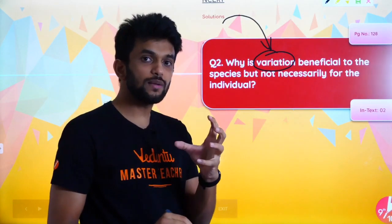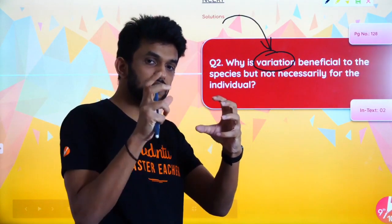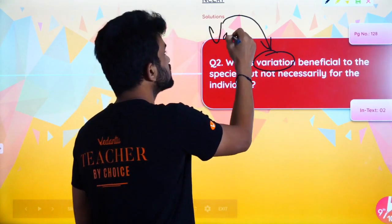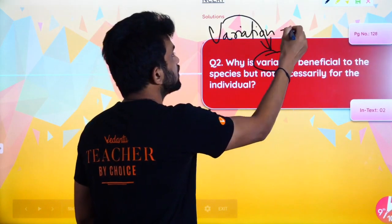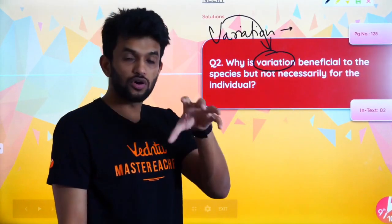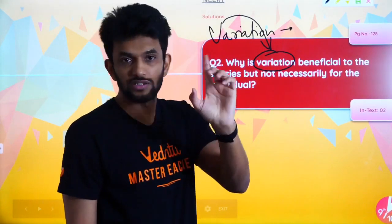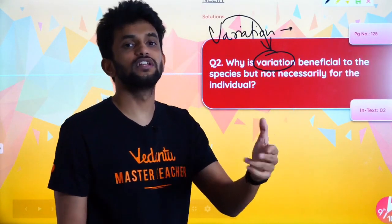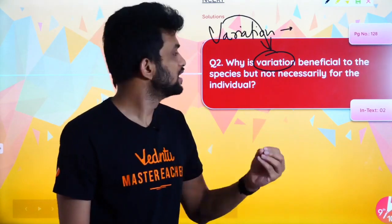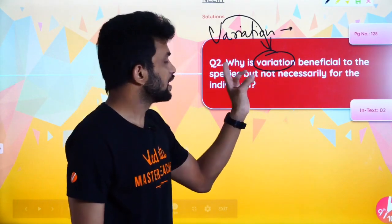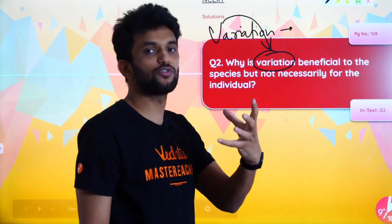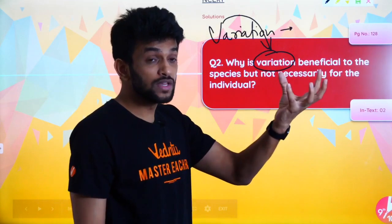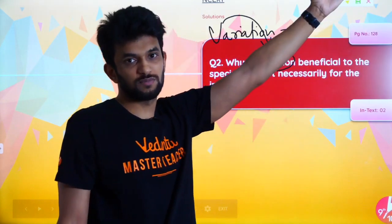Variation is the difference in characters amongst the organisms of the same species. Variation is caused because of reproduction — sexual reproduction mainly. It is beneficial for the species because it leads to the development of a stronger species.